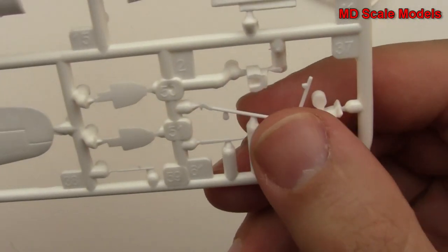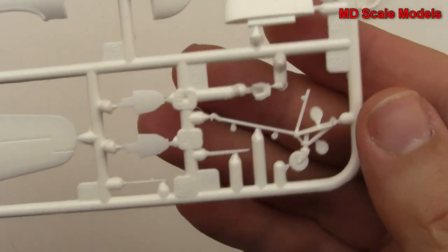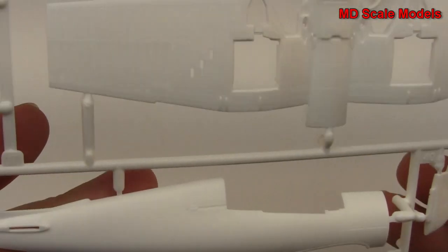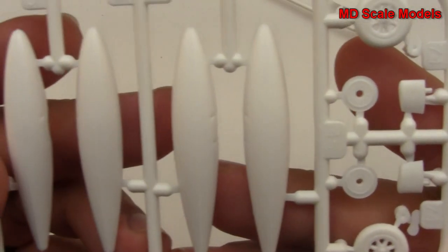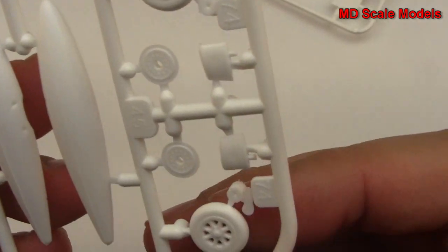That's our tail hook, tail wheel. And we've got some fuel tanks actually. These look like fuel tanks and then we've got our wheels.